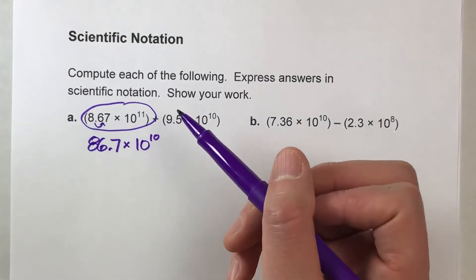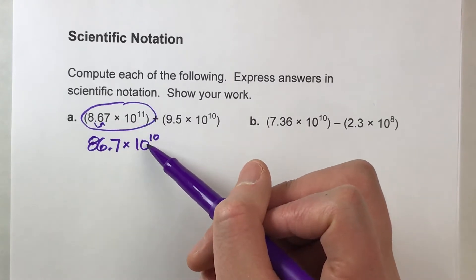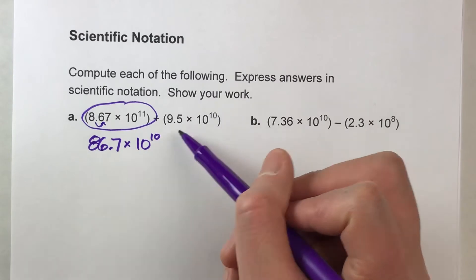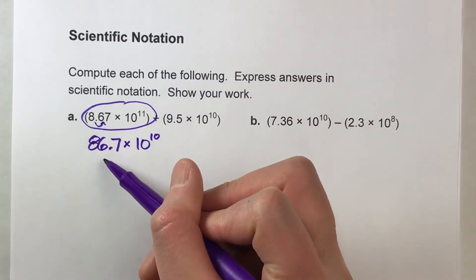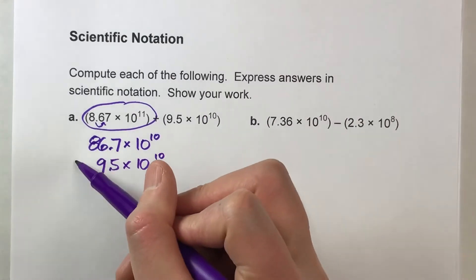So I moved that decimal over one place, and now because I've moved it over, I only have 10 more to go, so it's 10 to the 10th power. And now look, this and this, the two powers match up. So I can put my 9.5 times 10 to the 10th power underneath it.